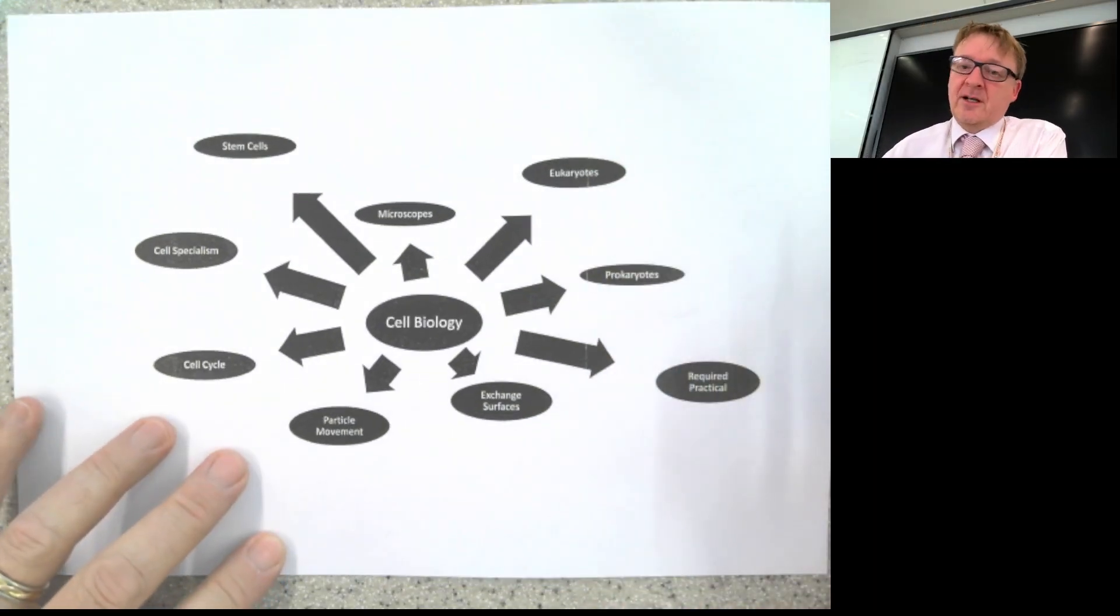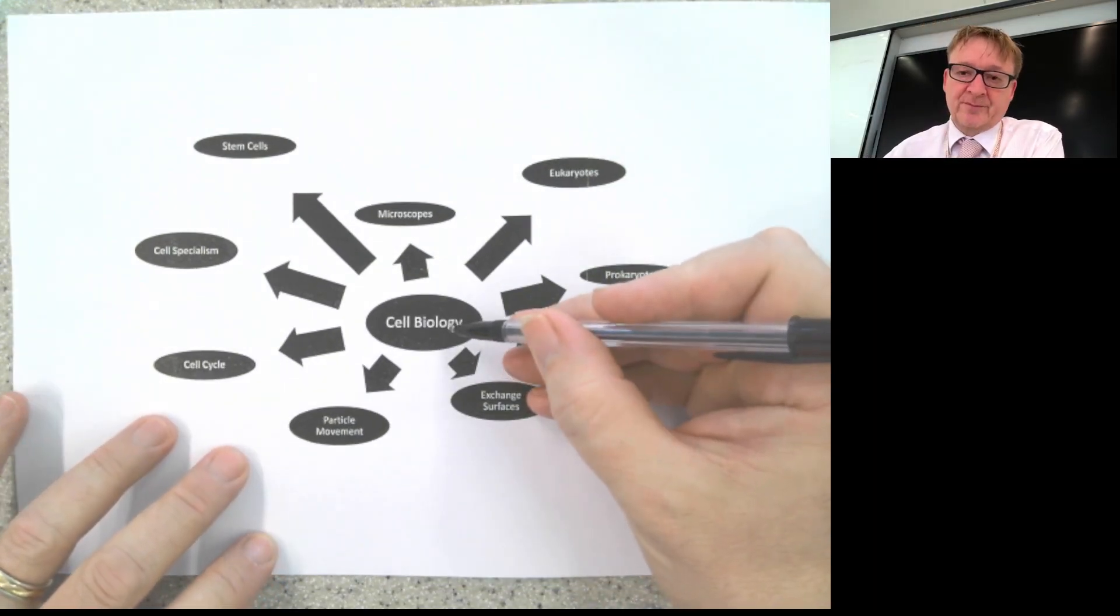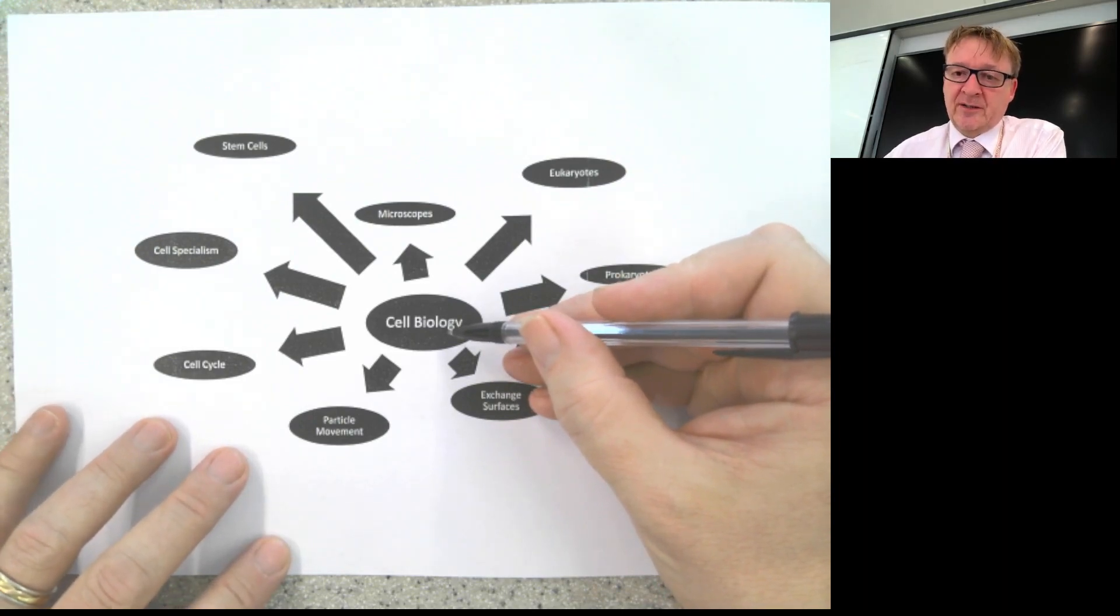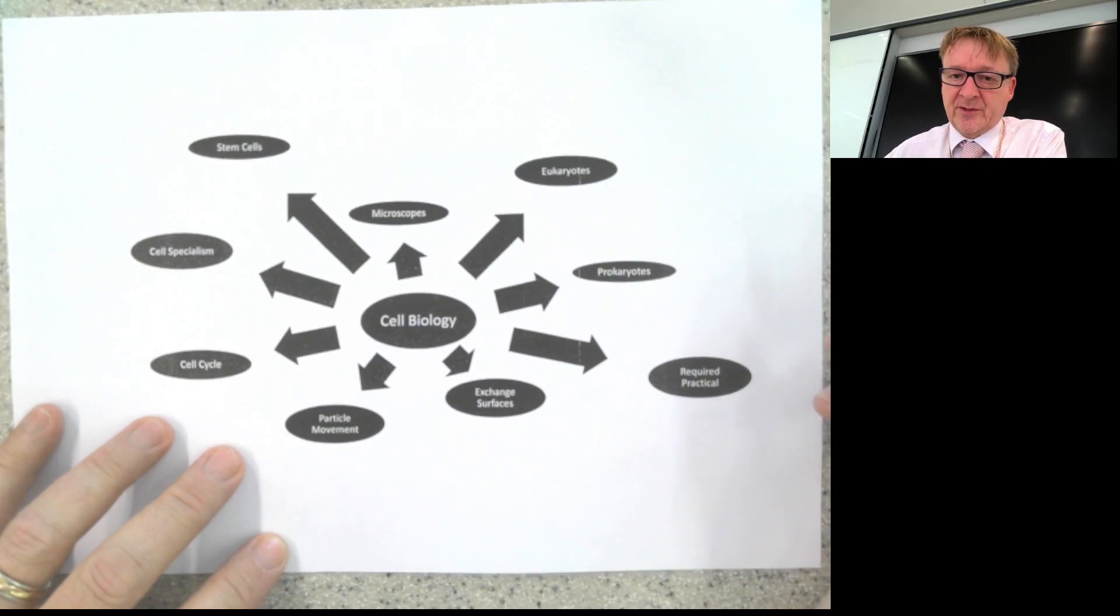This is the mind map for cell biology. It's basically everything you need to know for the whole topic, all the little sub-headings for it.